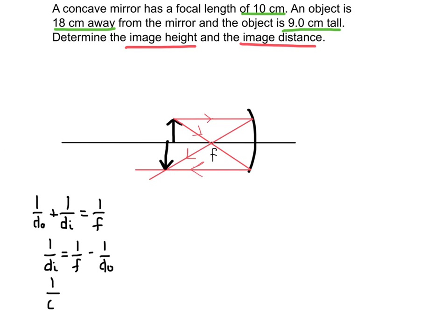And so I end up with this. And now I'm just going to go ahead and plug in the numbers here. So I have 1 over the focal length of 10 centimeters. And 1 over the object distance of 18 centimeters. That's right up here.